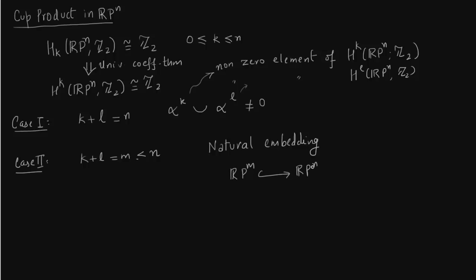So consider the natural embedding RP^M in RP^N. Now we talk about the graded ring maps. The arrow will reverse itself. And now we will use exactly the same idea which we used in case 1.